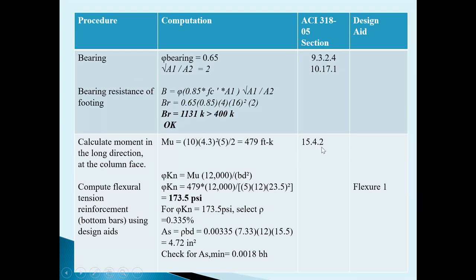For moment design, clause 15.4.2 states that the moment should be calculated from the face of the column. Using that condition, the design moment is 479 ft-K. We get a stress of 173.5 PSI, giving a steel ratio rho = 0.335%, and As = rho × B × D = 0.00335 × B × D, which comes to approximately 4.72 square inches.